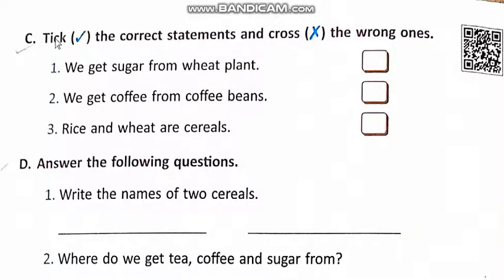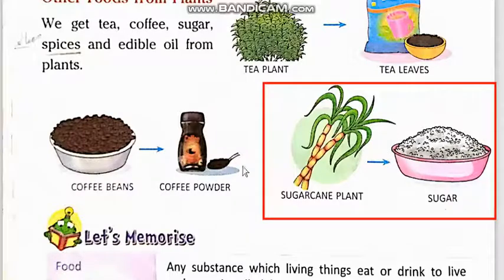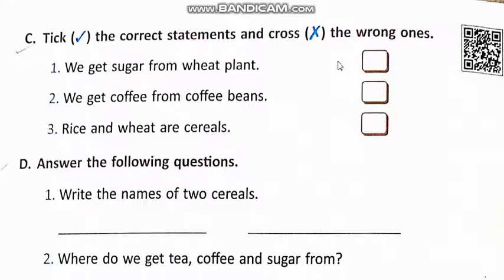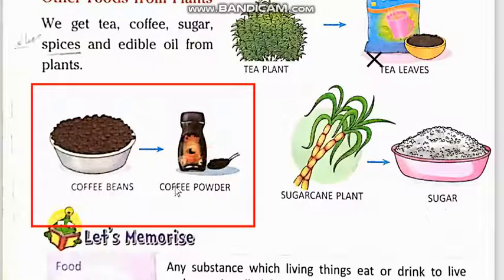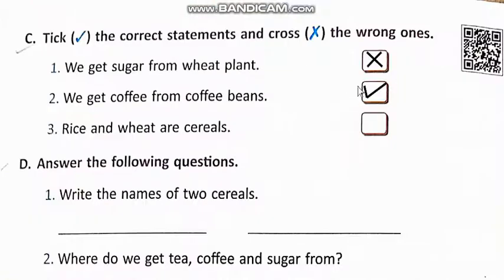C. Say hi statement per tick lagay or wrong statement per cross lagay. Number one: We get sugar from wheat plant. But we get sugar from sugar cane plant, so this statement is wrong — we write cross. Number two: We get coffee from coffee beans. This statement is correct — we write tick in front of it.